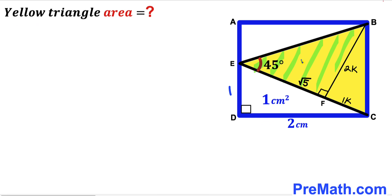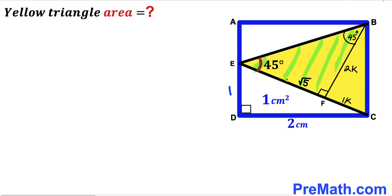Now let's focus on right triangle BFE. We know angle BEF is 45 degrees and angle BFE is 90 degrees. So angle FBE must also be 45 degrees, since the three interior angles must sum to 180 degrees. Since both base angles are 45 degrees, this is an isosceles triangle, meaning segment EF must equal side BF. Since BF equals 2K, side EF is also 2K.